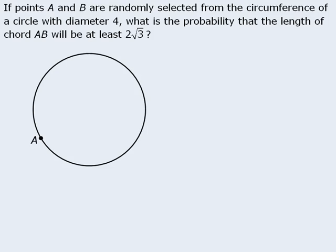what is the probability that the second point will be more than 2 root 3 units away from the first point, point A?